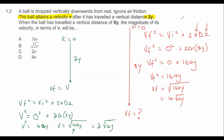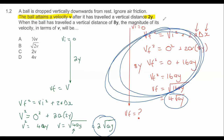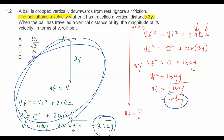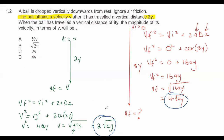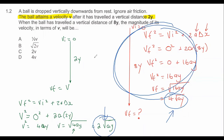Now look at the two answers and find the relationship. Situation 1 gives 2√(AY) and Situation 2 gives 4√(AY). So this velocity is double the first one. Therefore the answer is C, which is 2V.